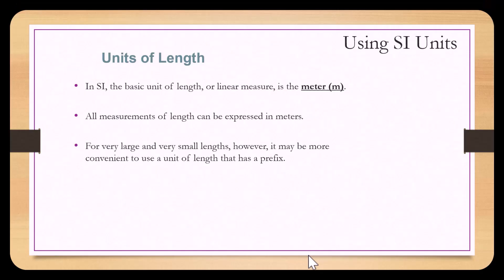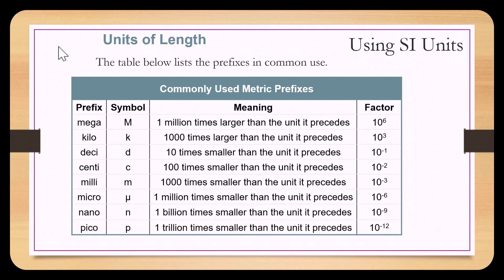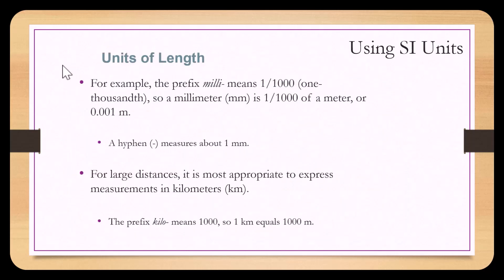In SI, the base unit for length or linear measure is the meter, denoted as lowercase m. All measurements of length can be expressed in meters, but for very large or very small lengths it may be more convenient to use a unit with a prefix. Chemists commonly work with prefixes from micro to kilo, where micro is one million times smaller than the unit it precedes, and kilo is one thousand times larger. When the prefix milli is put in front of meter, because milli is 10 to the negative third, it divides the meter into one thousandth, so a millimeter equals 0.001 meters.